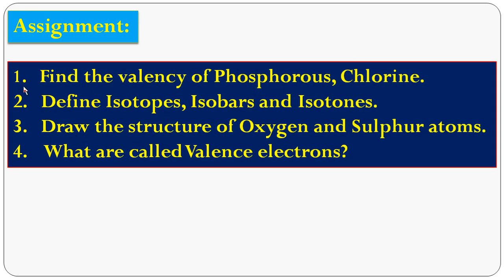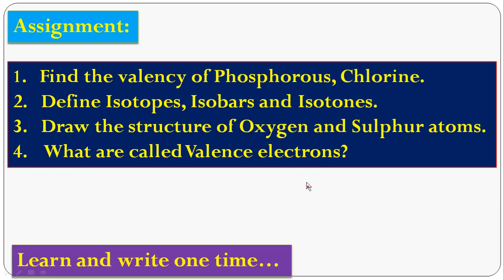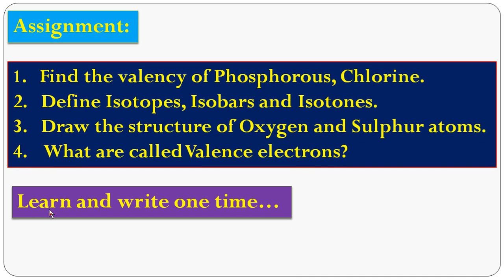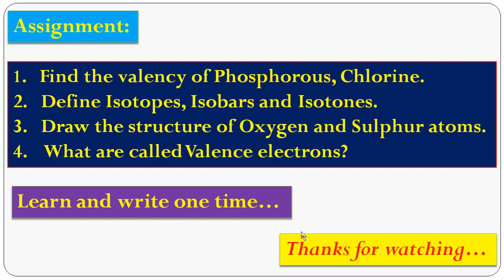Now for the assignment: first, find the valency of phosphorus and chlorine. Second, define isotopes, isobars, and isotones. Third, draw the structure of oxygen and sulfur atoms. Fourth, what are called valence electrons? Learn and write these questions. Thank you, students.